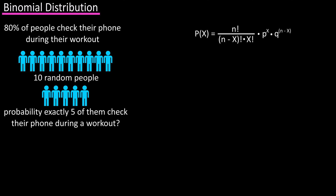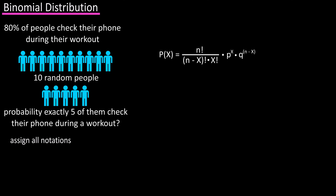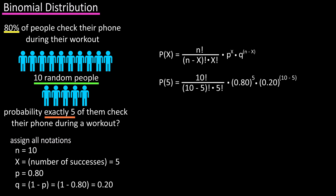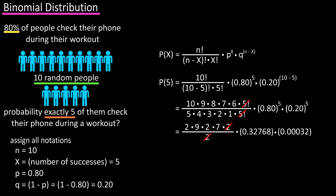Now that we know it meets the requirements, we can use the formula. We need to assign n, x, p, and q. n equals the number of trials, and in the question we're looking at 10 trials. x equals the number of successes, and that number is 5, which is given in the question. p is the probability of success, and that is 80% or 0.80. And q is the probability of failure, which is 1 minus p, which equals 20% or 0.20. Now we're ready to plug and calculate: probability of 5 successes equals 10 factorial divided by 10 minus 5 times 5 factorial, times 0.80 raised to the fifth, times 0.20 raised to the 10 minus 5.